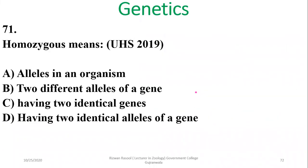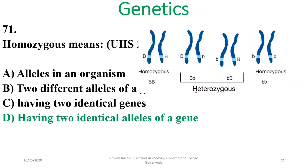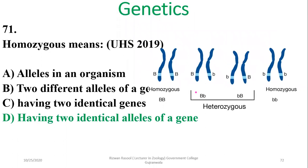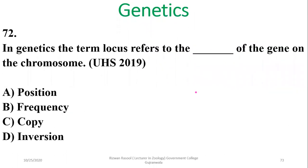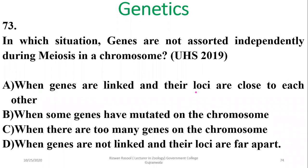Question 71: Homozygous means having two identical alleles of a gene; heterozygous means having two different alleles. In genetics, the term 'locus' refers to the position of a gene on the chromosome. Alpha is the right option.